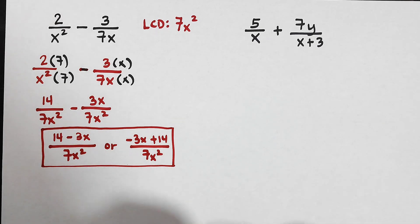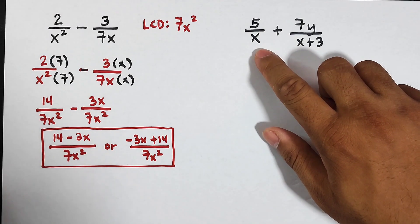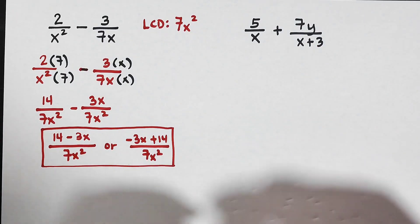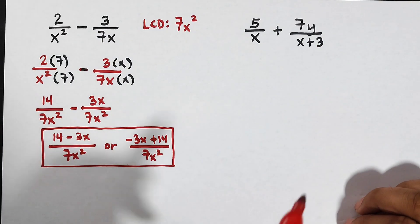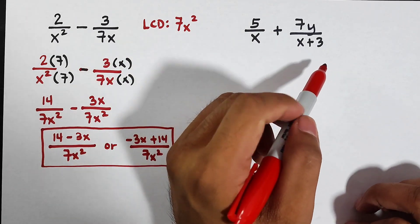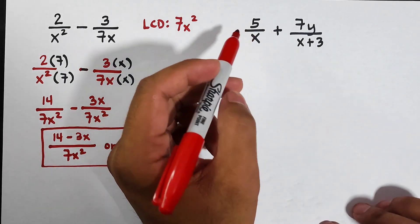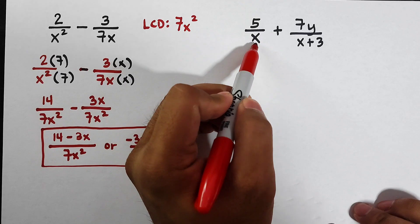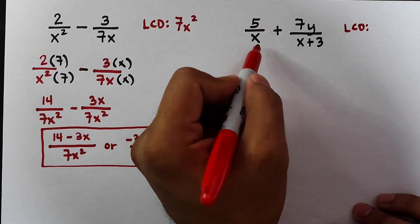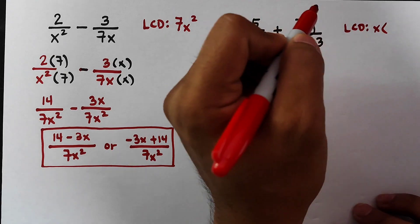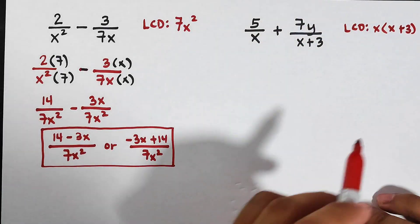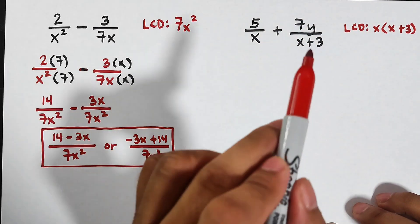Now let's move on with item number two. We have 5 over x plus 7y over x plus 3. The denominators are different — this is a monomial and this is a binomial. Even though both contain x, since one is a monomial and the other is a binomial, they are different. The rule here is straightforward.